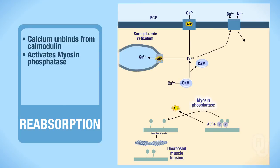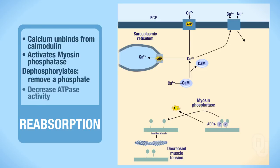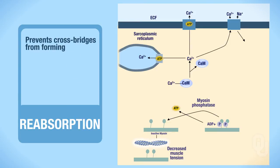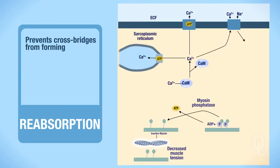You have seen phosphatase before — that enzyme always dephosphorylates, meaning it removes a phosphate. So the phosphate is removed from the myosin head. When that happens, ATPase activity decreases, which prevents cross bridges from forming. As a result, the force that the muscle can generate decreases. That is smooth muscle relaxation, and you will need to compare that to skeletal muscle.